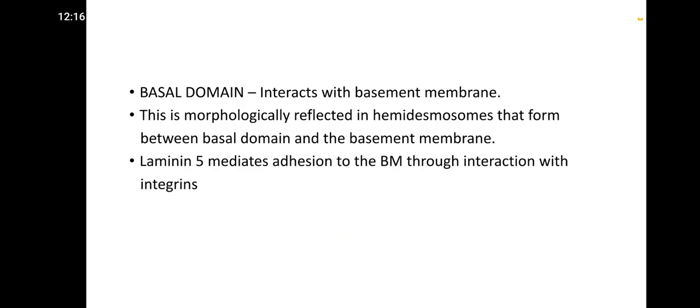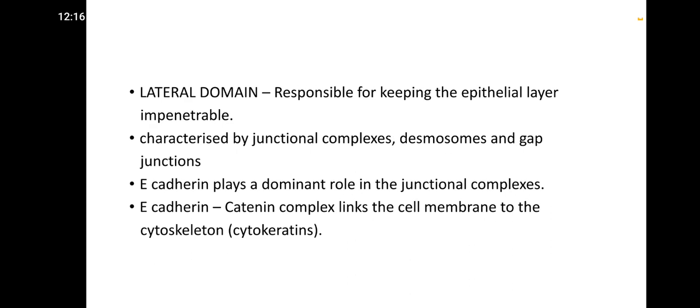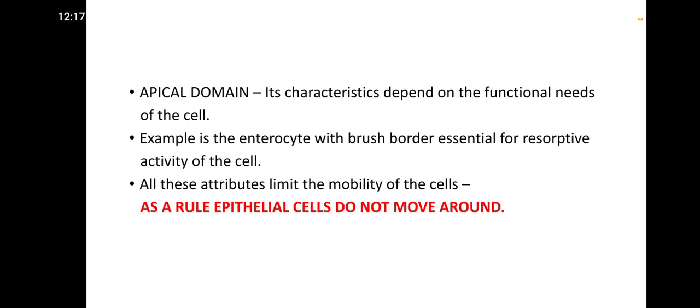Epithelial cells maintain intercellular adhesion through tight junctions, adherent junctions, and gap junctions. The basal domain interacts with the basal membrane, reflected morphologically in hemidesmosomes. Laminin-5 mediates adhesion of the basal domain to the basal membrane through interaction with integrins. The lateral domain keeps the epithelial layer impenetrable and is characterized by junctional complexes and desmosomes. E-cadherin plays a dominant role; the E-cadherin–catenin complex links the cell membrane to the cytoskeleton.